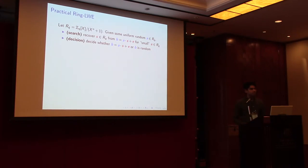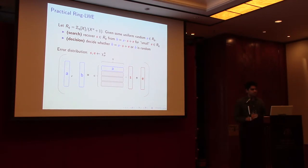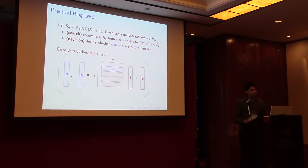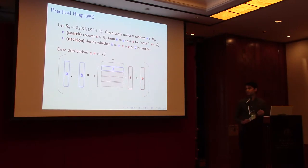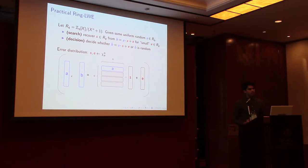The decision version is simply to distinguish whether B is a noisy product or whether B is uniform random. The error distribution is a discrete Gaussian of narrow width sigma, sampling the coefficients from this distribution. Representing one ring LWE sample in matrix-vector notation: the first component is an n-dimensional coefficient vector A, and the rows of this matrix are heavily correlated, so one ring LWE sample is in some sense equivalent to n structured LWE samples.